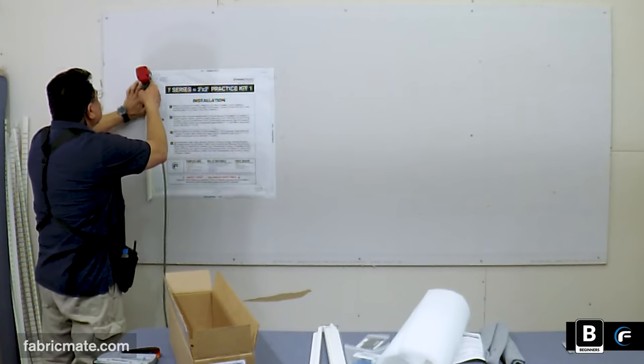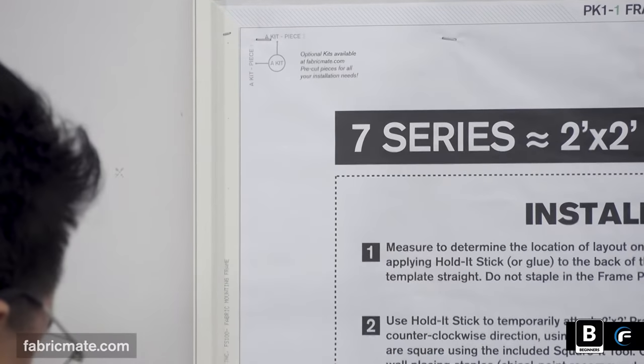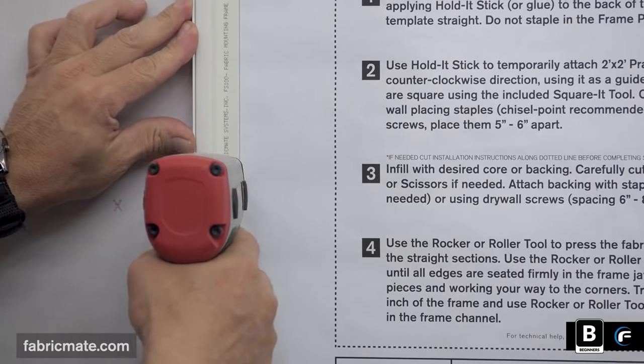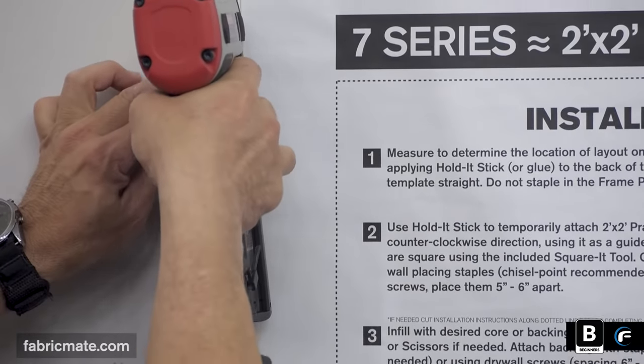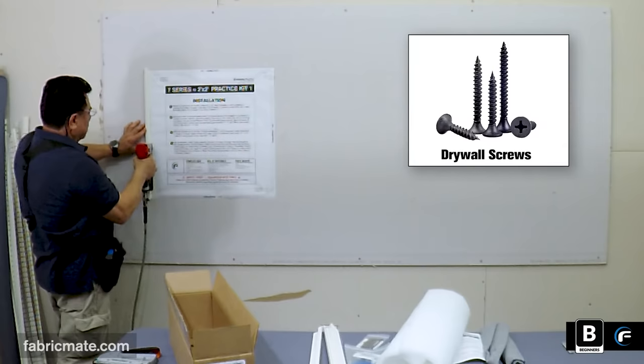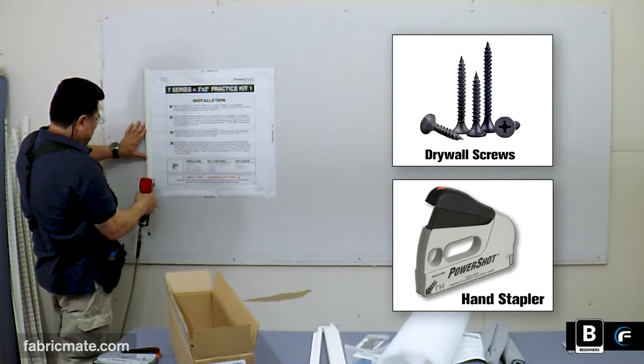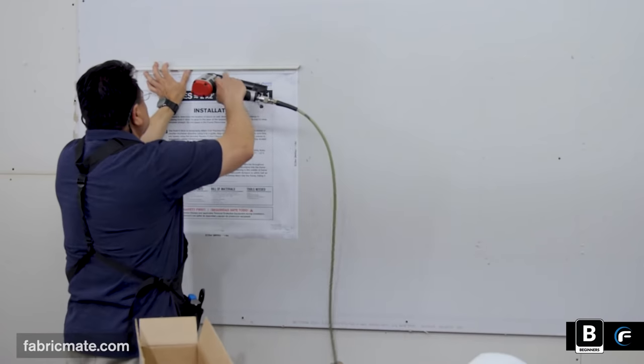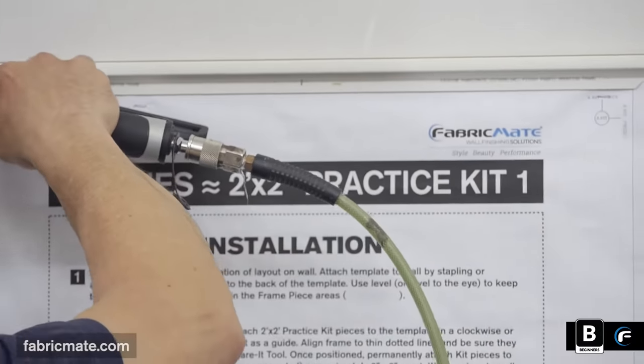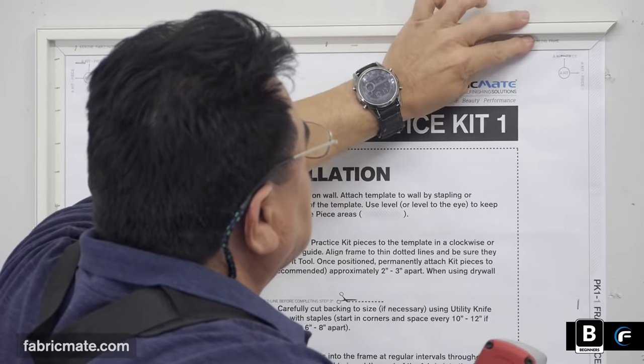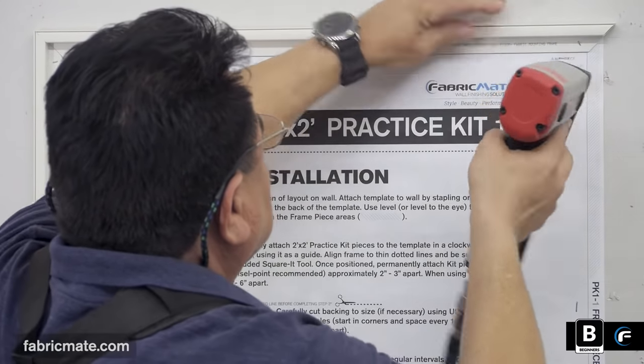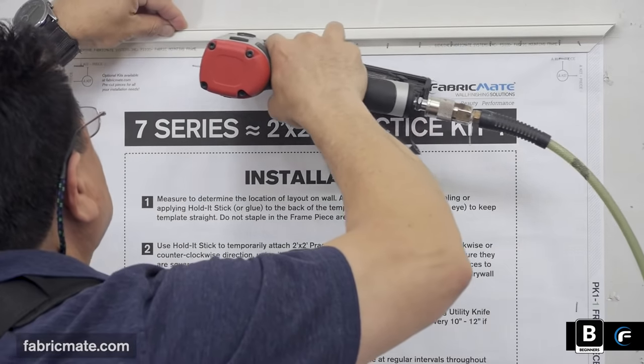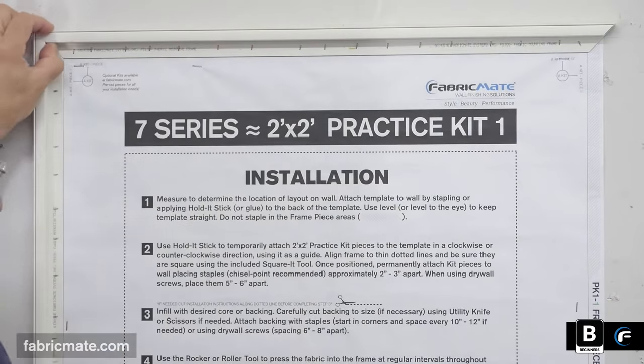You see the template was already stapled up. Now you have the fabric mounting frame following the lines on the template. You'll see a pneumatic stapler being used here. You can use drywall screws or a small hand stapler as well. So you're just going to follow the steps. You've seen the left piece going on here. Now you're going to see the top piece of fabric mounting frame going up. He'll continue on around to the right piece and the bottom. It's a very quick process.